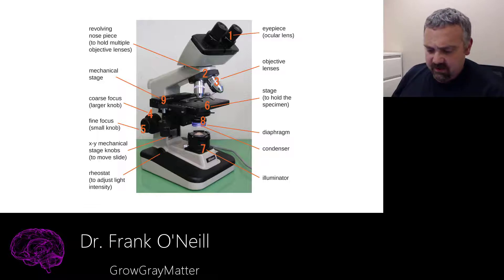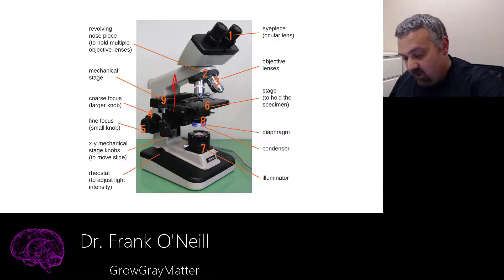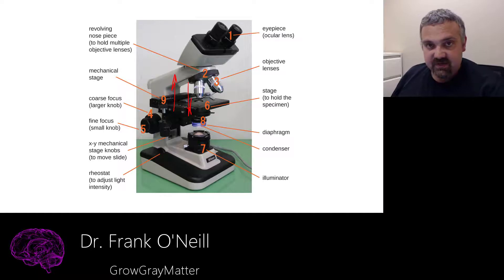So number four, the coarse focus knob. As you can see, it looks like you have one knob, but it's actually two separate knobs. Number four is the coarse adjustment knob. Number five is the fine adjustment knob. So they both do the same thing. But when you turn the coarse knob, you're going to get the stage to move up or down quite a bit.